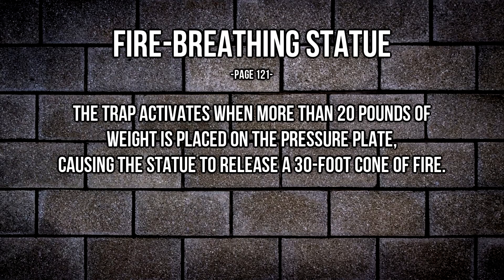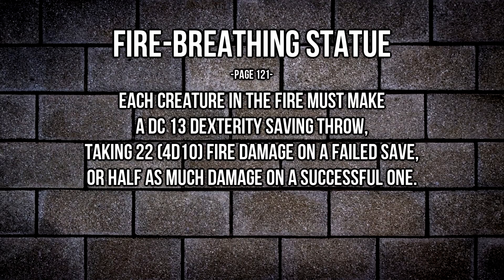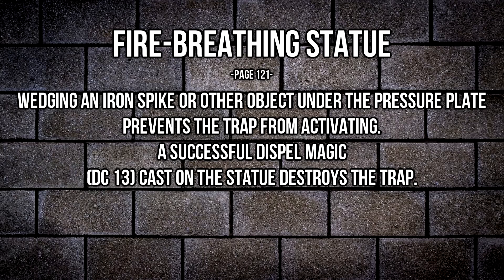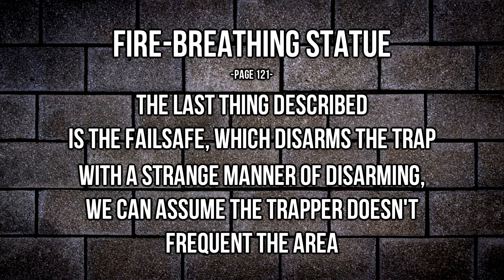The trap is activated when more than 20 pounds of weight is placed on the pressure plate, causing the statue to release a 30-foot cone of fire. Each creature in the fire must make a DC 13 Dexterity saving throw, taking 22 fire damage on a failed save or half as much on a successful one. Finally we have the outcome, which is a buttload of fire damage. Wedging an iron spike or other object under the plate prevents the trap from activating. A successful dispel magic cast on the statue will also destroy the trap. At the very end they describe the failsafe — because it's a bit more cryptic than pressing the off button, we can assume the trapper either doesn't venture here often or can float.